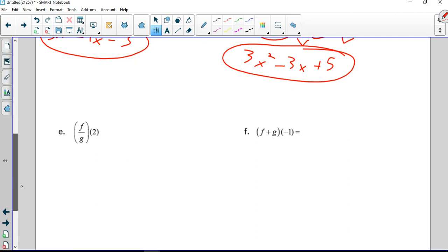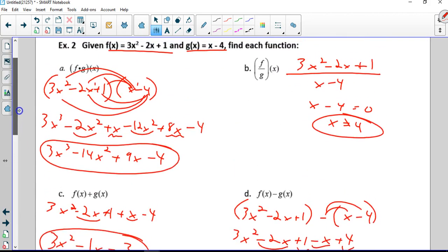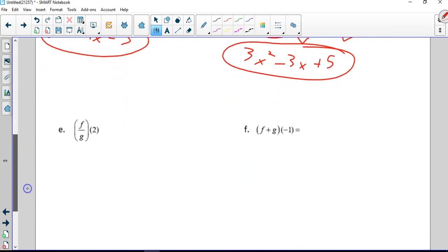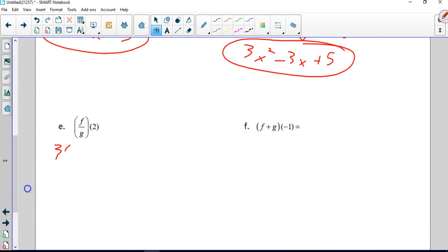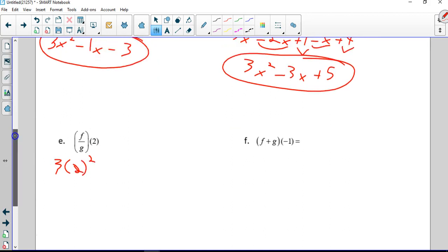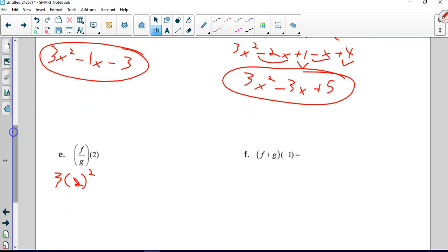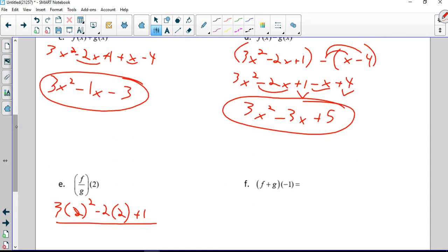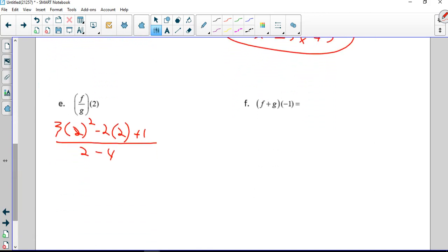And we're going to do f divided by g, plugging in a 2. So f is 3 times 2 squared minus 2x plus 1 divided by g which was x minus 4. So we have 2 squared is 4, times 3 is 12, minus 4 plus 1 over negative 2. 8 plus 1 is 9 over negative 2, negative 9 halves.